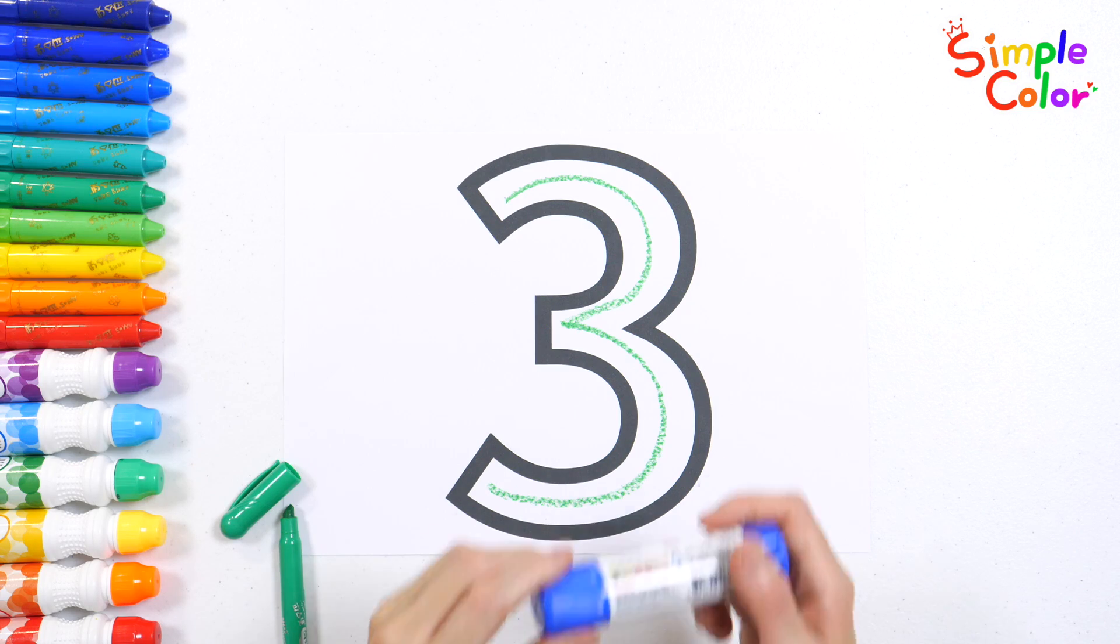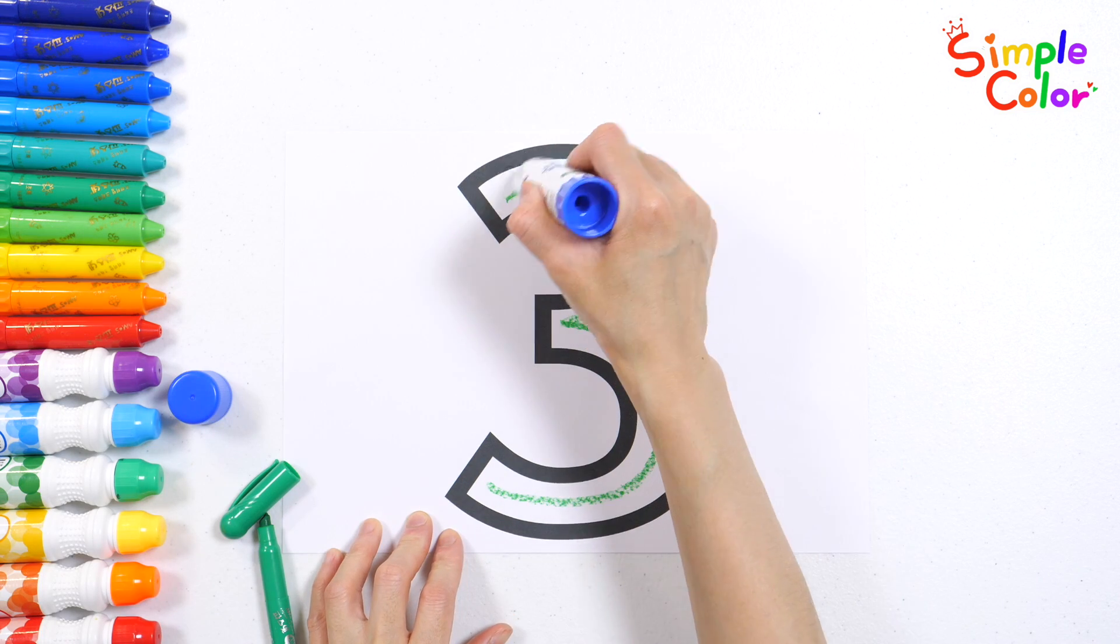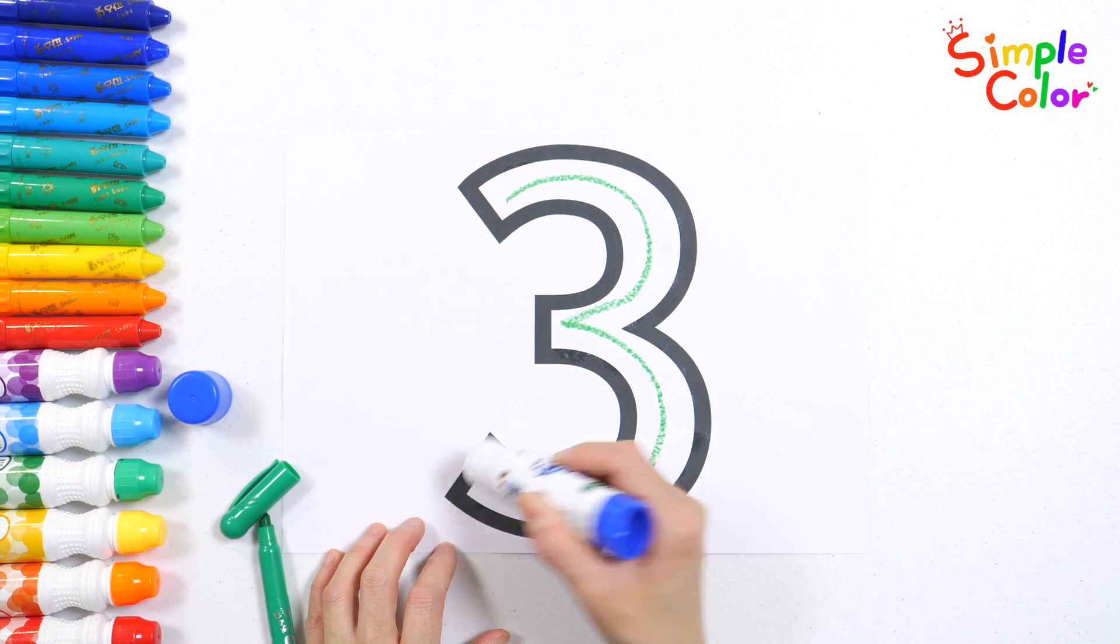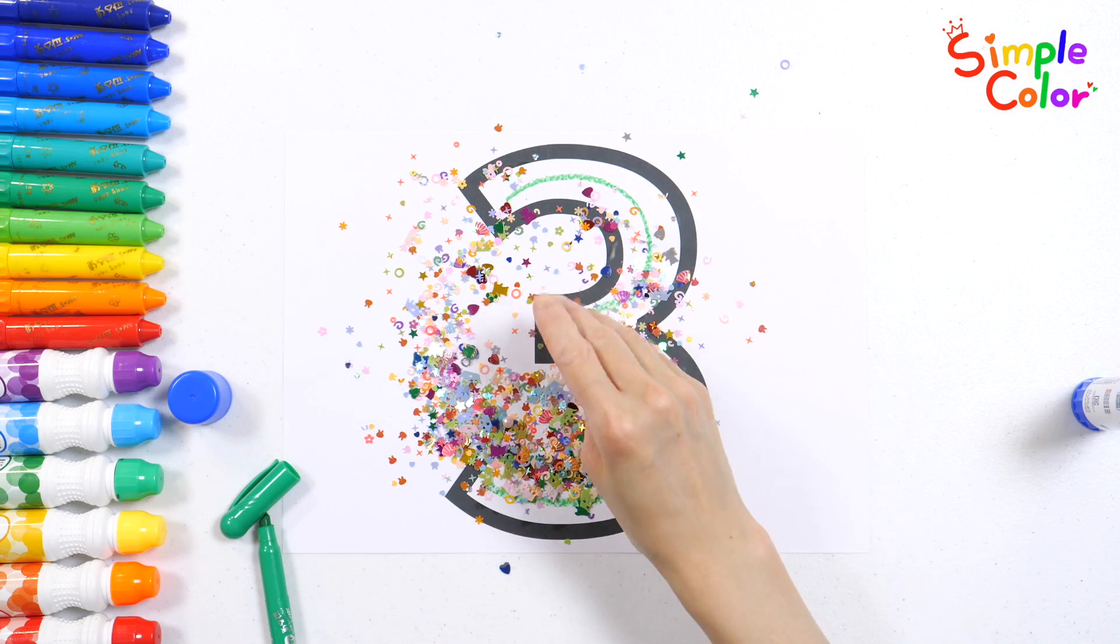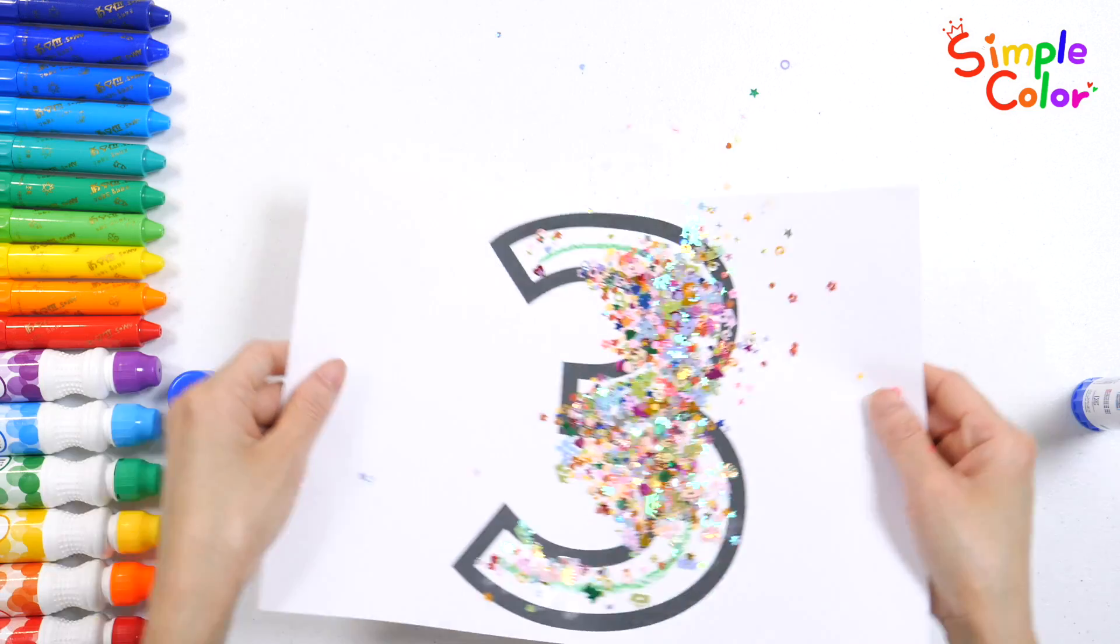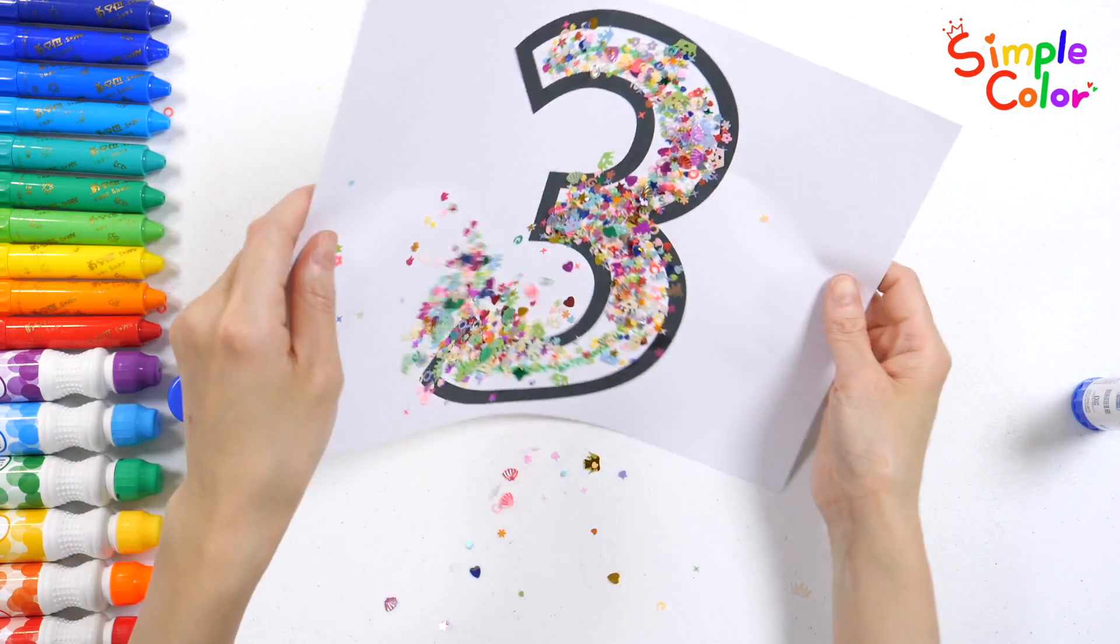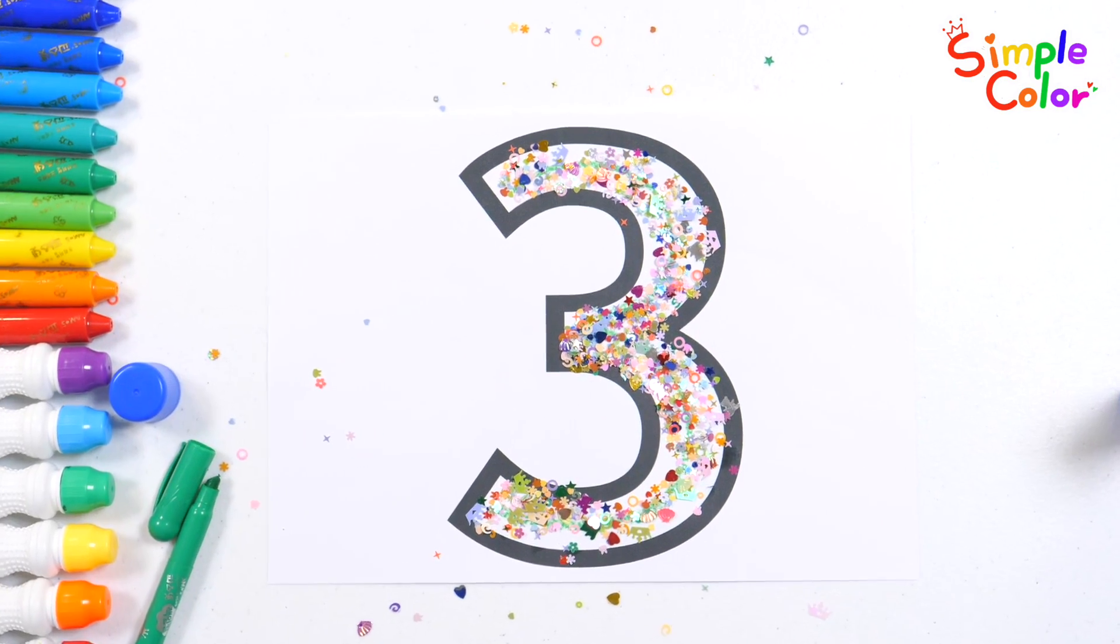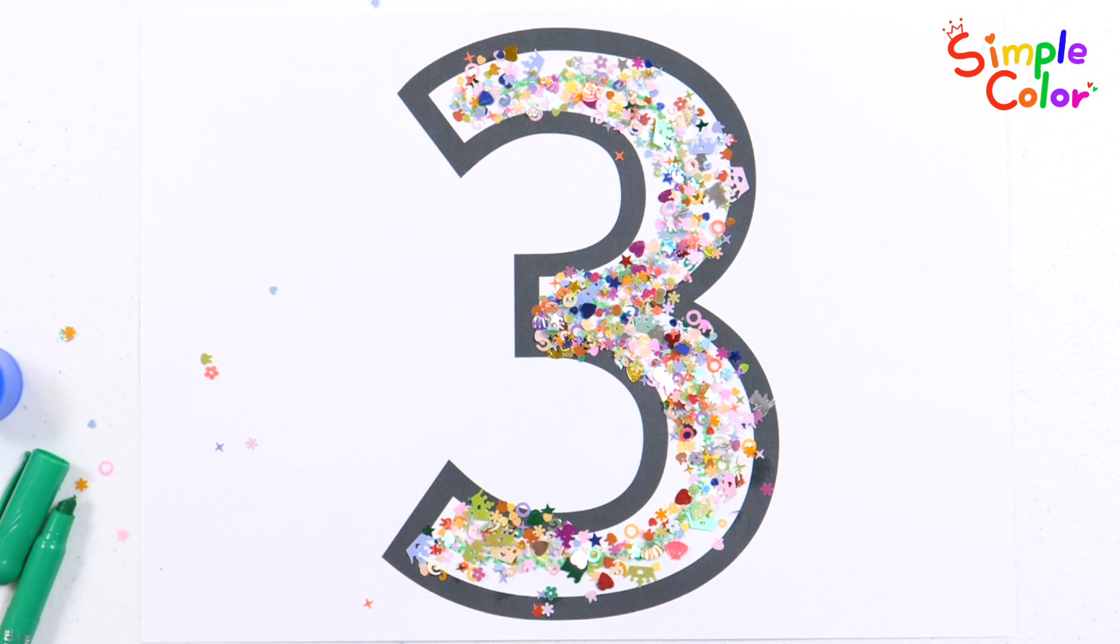This time, let's decorate our number. Put some glue on the parts you want to decorate. Now, let's sprinkle on some glitter. Wow, it's a sparkly, beautiful number three. Three, three. Good job!